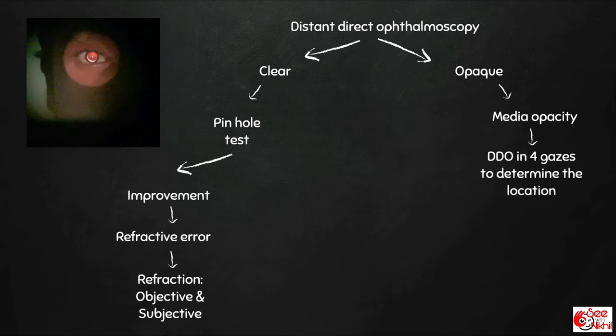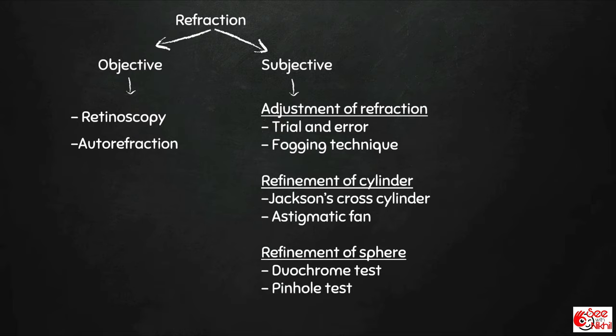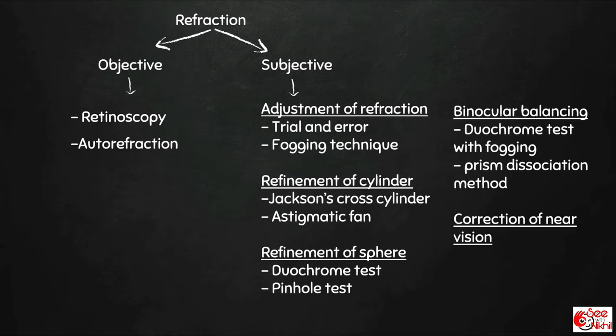If there is improvement in vision with pinhole, it indicates refractive error and a refraction should be performed. If there is no improvement with pinhole, it indicates posterior segment pathology and a direct or indirect ophthalmoscopy should be performed. Objective refraction consists of retinoscopy and autorefraction. Subjective refraction consists of adjustment of refraction, refinement of cylinder, refinement of sphere, binocular balancing, and correction of near vision.